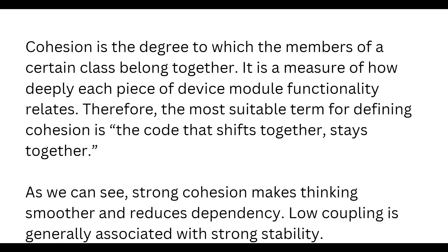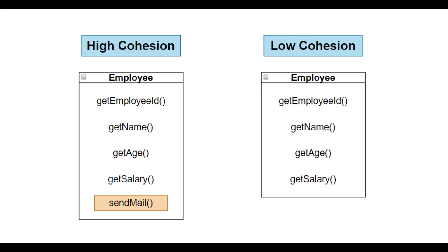Let's take an example. In one Employee class we have get employee ID, get name, get age, and get salary — these four methods relate to the Employee class and retrieve data from your employee table. But the send mail method doesn't relate to this Employee class; it could belong to a separate send mail class, main class, or mail utility class, which would make more sense than putting it in the Employee class.